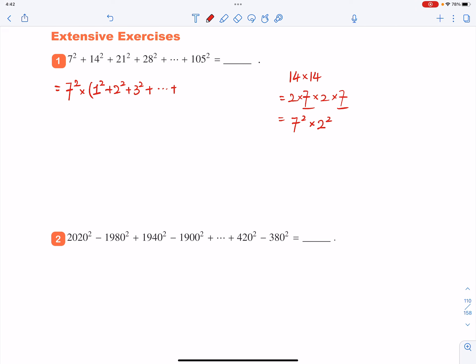Since 105 divided by 7 is 15, that means the last term will be 15 squared. And then let's continue. That'll be 7 squared times by... Now we can use that formula to do the calculation.